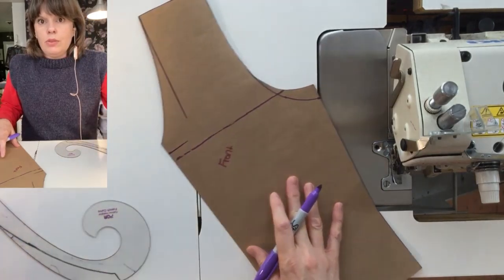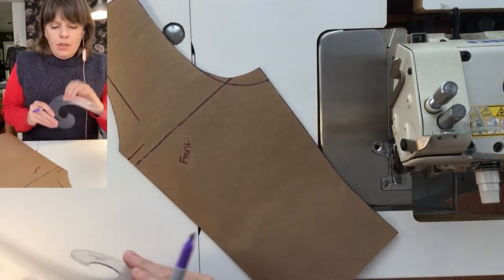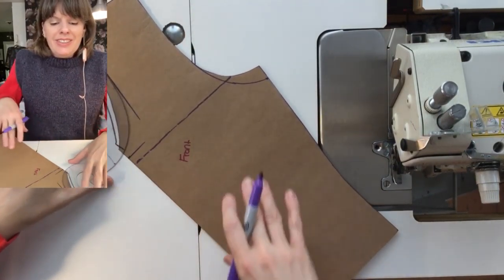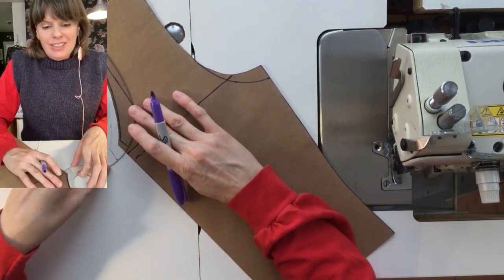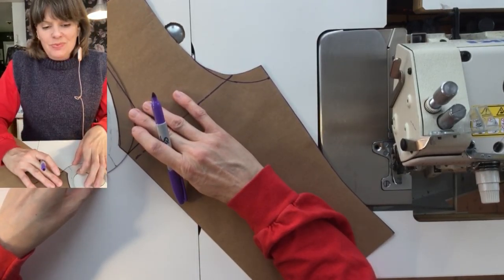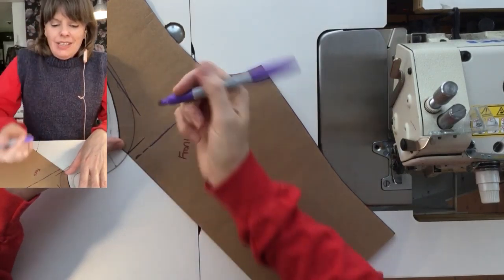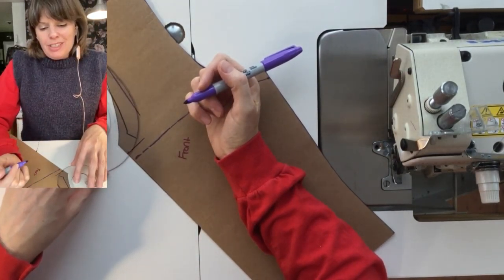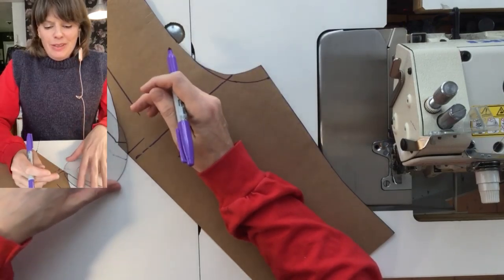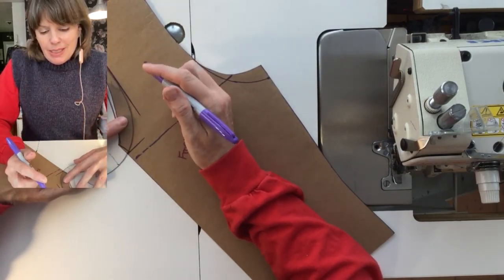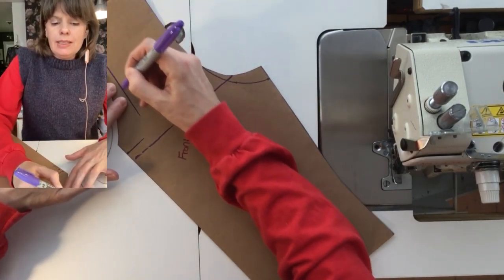So I'm just going to do the front first and then we'll do the back. Okay so you can see I actually just have a cheater line drawn onto my French curve here just from other neckline adjustments but basically I want to meet these lines.